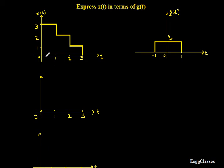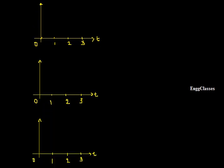If you look at x(t), the highest amplitude is 3, and g(t) has amplitude 1. So to get x(t), I must add 3 g(t)'s. The highest amplitude is 3, and since the amplitude of g(t) is only 1, I have to add 3 of such signals. That is why I have drawn 3 signals here.